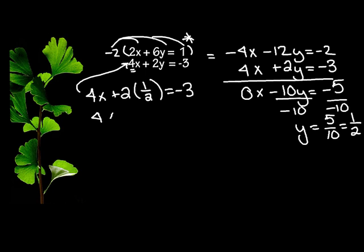So I have 4x plus, now 2 can be written as over 1. So 2 over 1 times 1 over 2 is 1, equals negative 3.